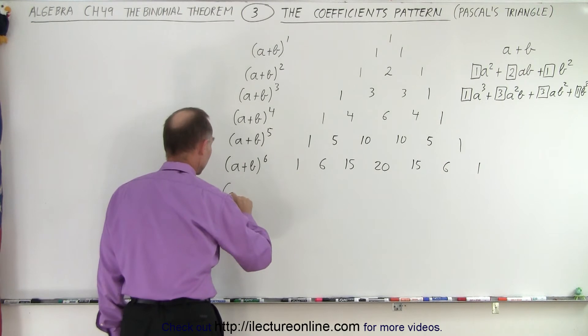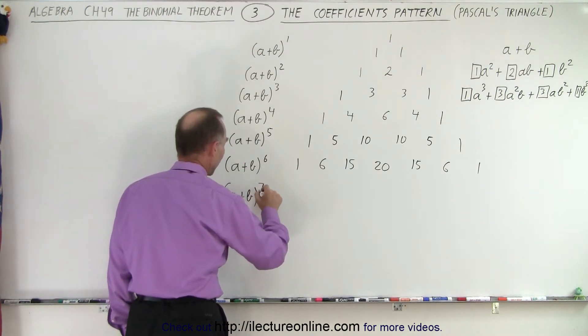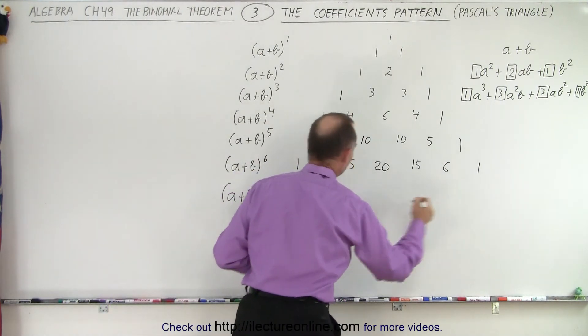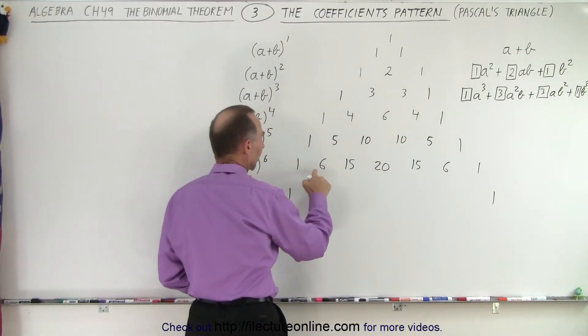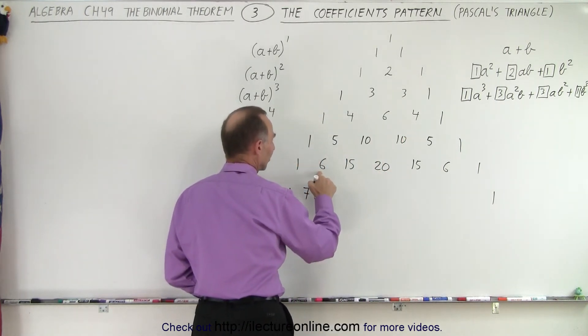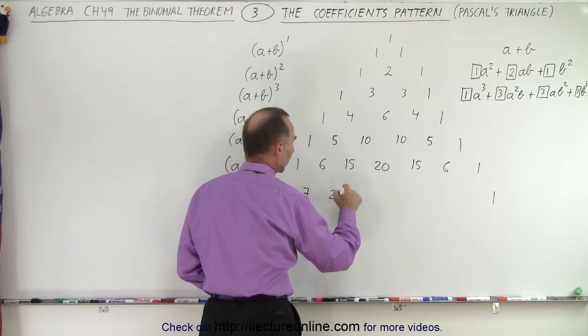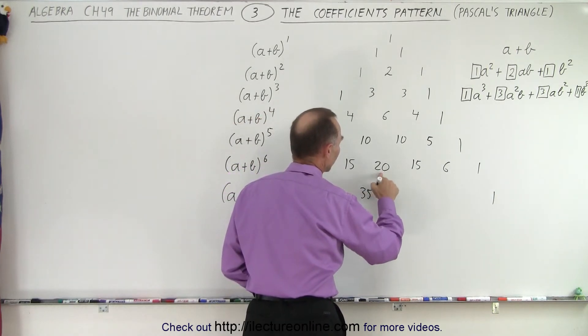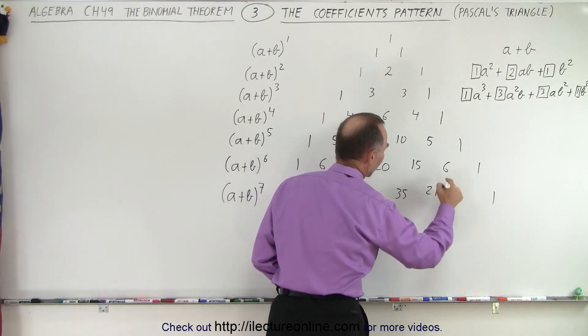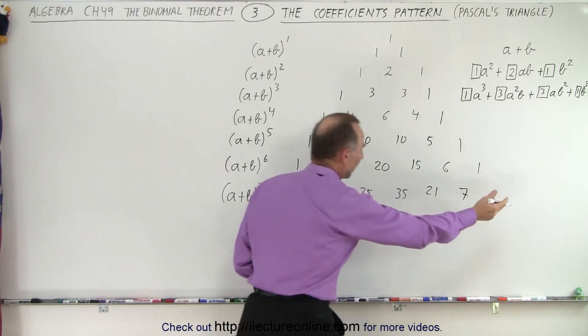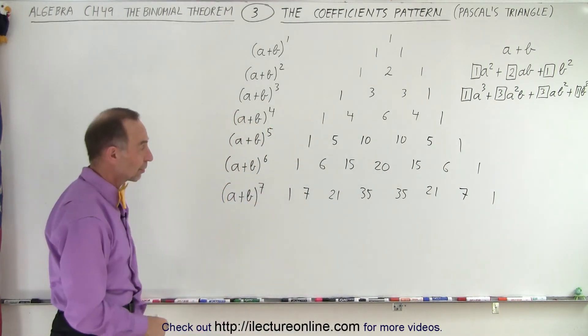Let's do one more. How about a plus b to the seventh power? Again, we move the ones out. And here we take 1 plus 6. That gives us a 7. 6 plus 15 gives us a 21. 15 plus 20 gives us a 35. 20 plus 15 is 35. 15 plus 6 is 21. 6 plus 1 is 7. And there's our next set of numerical coefficients.